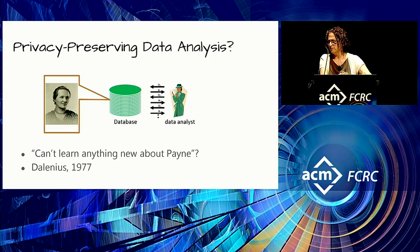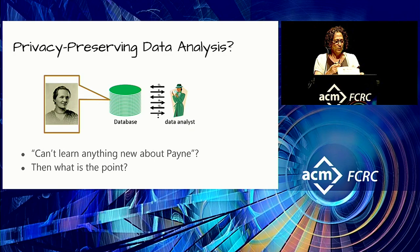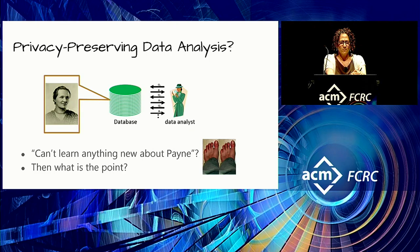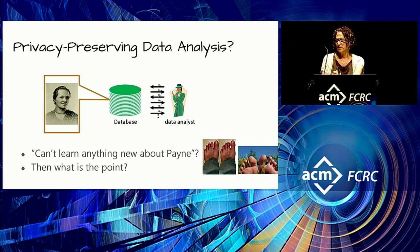One intuition: the data analyst shouldn't be able to learn anything new about Payne that she didn't know before interacting with the dataset. That's a nice definition, with echoes of semantic security from cryptography. But the problem is: what's the point? Suppose I'm from Mars and think all humans have two left feet — and in particular, that Payne has two left feet. I interact with the dataset and learn that the vast majority of humans have one left and one right foot. Has her privacy been compromised?